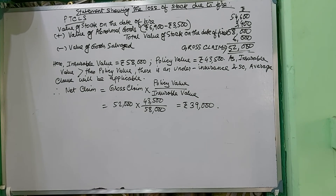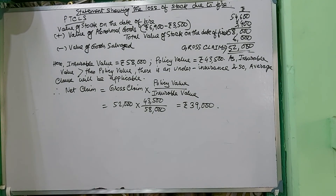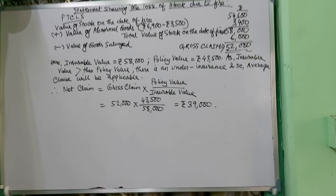This is one type of sum where abnormal goods adjustments are given. It's very important — this type of sum appears in different exams at different times. This is sum number 17 of today's work. I hope you understood, and in the next class I will do a different sum. Thank you for your patient hearing, have a nice day ahead.